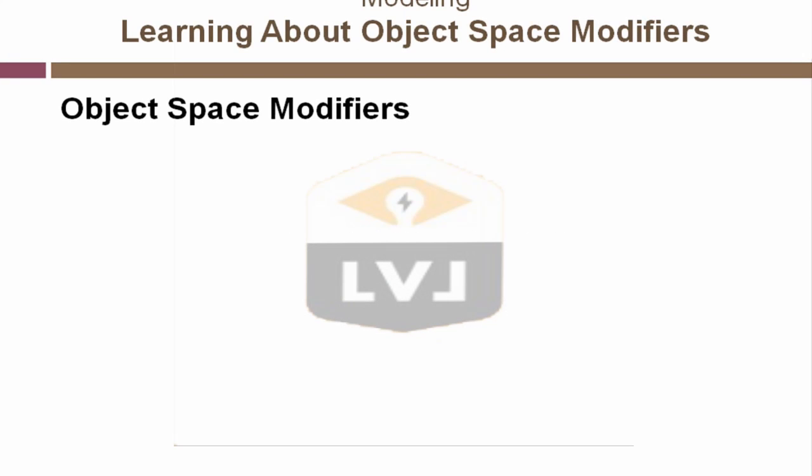Object space modifiers work directly on objects. Modifiers provide an enormously flexible way of working within 3ds Max. There's a wide variety of modifiers that can be assigned to both 2D and 3D geometry for an equally wide range of reasons.